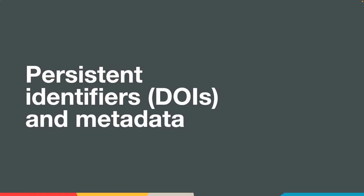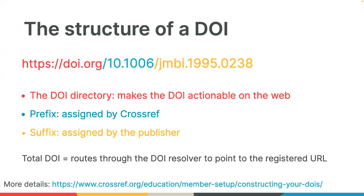Simply put, a DOI is a persistent link and an identifier for a content item. Crossref doesn't give you DOIs — you don't buy DOIs per se — but rather members create them for each content item that they want to register with us. A DOI is composed of three sections: the red part is the resolver address — each DOI is an identifier but also an actionable link, which means when you click on it, it's resolvable in a browser and will take you to the URL registered in your metadata.